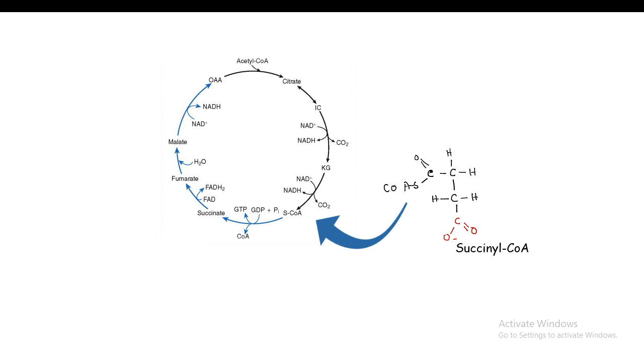Ultimate goal is to generate ATP. In this situation, the succinyl CoA intermediate, even if it is not converted to acetyl CoA, can be directly channeled into the TCA cycle and can be utilized to generate ATP. So the ultimate goal is the same, the pathway by which we are achieving these goals might be a bit different.